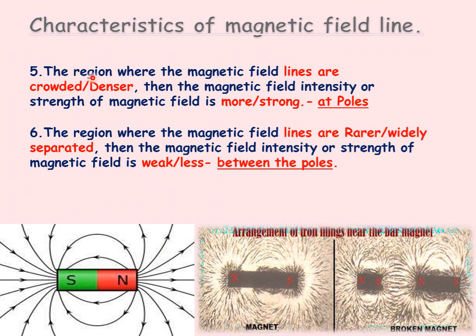The fifth characteristic: where magnetic field lines are crowded — as we can see at the poles — the magnetic field intensity or strength is more. That is, the magnetic field at the poles of a bar magnet is always maximum. In the region between the two poles where field lines are widely separated, the magnetic field strength is weak or less. This can be seen with iron filings placed near a magnet.